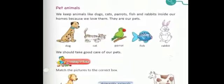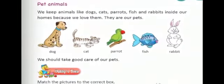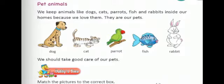Now let us see the next topic, that is pet animals. We keep animals like dogs, cats, parrots, fish and rabbits inside our homes because we love them. They are our pets. Dogs guard our homes. We should take good care of our pets. If we are keeping pets at home, then we need to keep their areas very clean. We should keep them proper medical facility and give them proper food so that they remain fit and healthy.